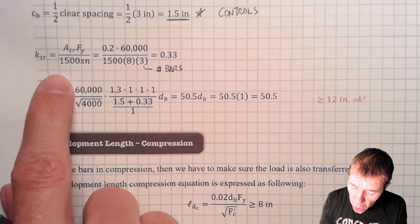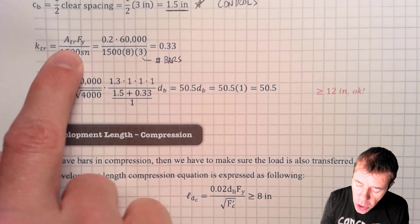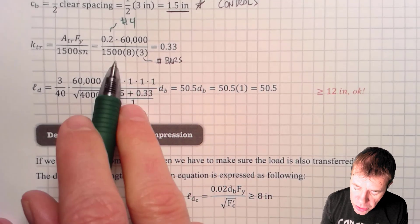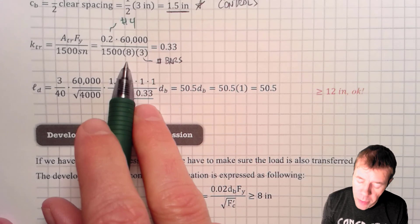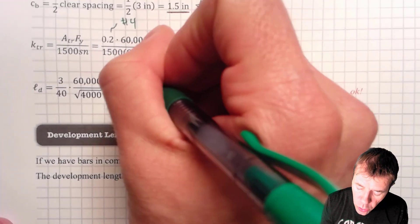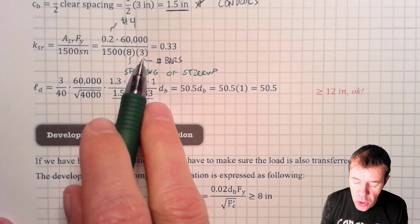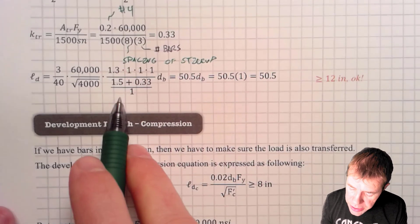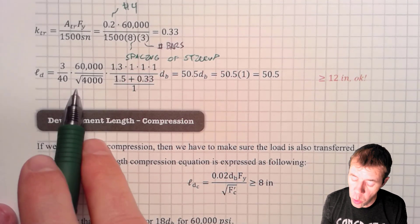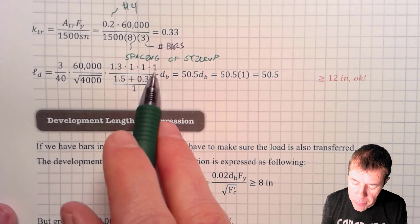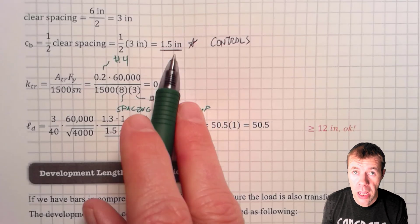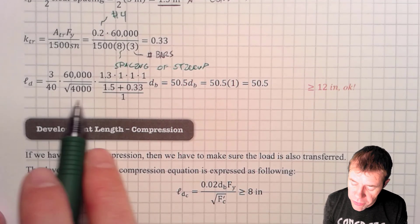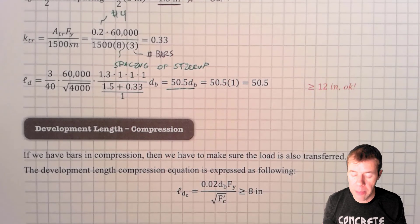Now we're going to calculate our K_TR. K_TR uses the area of our stirrup — that is the area of a number 4 bar — times the yield strength of 60,000, divided by 1,500 as a constant, divided by 8 inches (the stirrup spacing), and divided by the number of bars being confined. I calculate a K_TR of 0.33. Plugging everything into the full equation, with C_B of 1.5 and K_TR of 0.33 divided by the bar diameter of 1, I get 50.5 times the bar diameter.